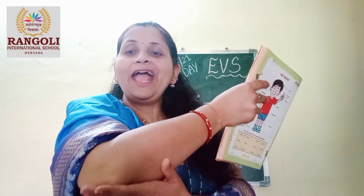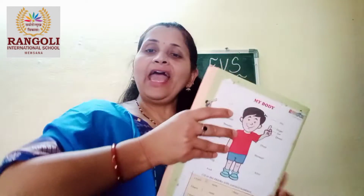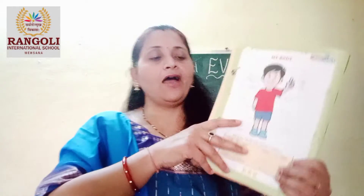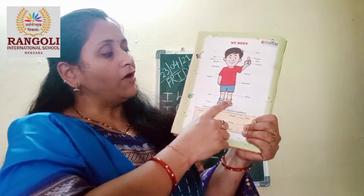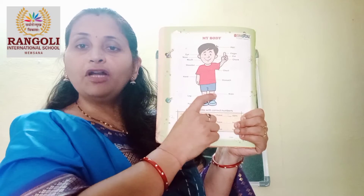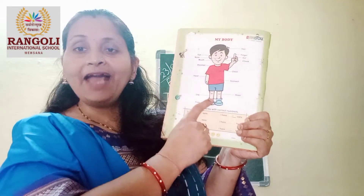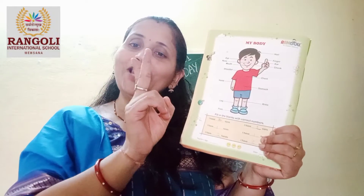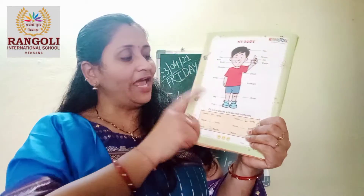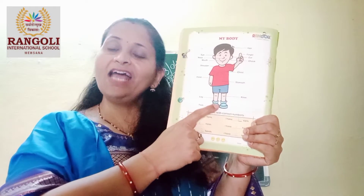We call it arm also. Then look at here — which letter is this? L. So this is our elbow. Okay? Then look at here, what is this? Knee. Then what is this? This is our leg. How many legs? Two legs. And what is this? This is our foot.